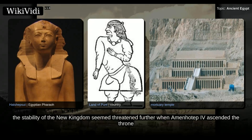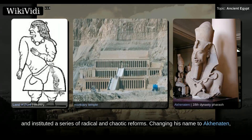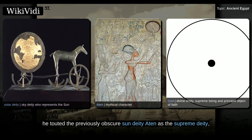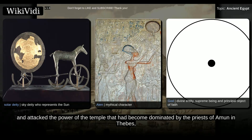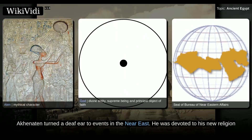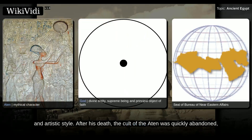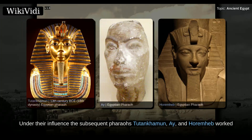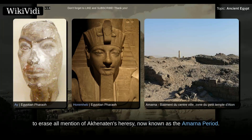Around 1350 BC, the stability of the New Kingdom seemed threatened further when Amenhotep IV ascended the throne and instituted a series of radical and chaotic reforms, changing his name to Akhenaten. He touted the previously obscure sun deity Aten as the supreme deity, suppressed the worship of most other deities, and attacked the power of the temple that had become dominated by the priests of Amun in Thebes, whom he saw as corrupt. Moving the capital to the new city of Akhetaten, Akhenaten turned a deaf ear to events in the Near East. He was devoted to his new religion and artistic style. After his death, the cult of the Aten was quickly abandoned. The priests of Amun soon regained power and returned the capital to Thebes. Under their influence, the subsequent pharaohs Tutankhamun, Ay, and Horemheb worked to erase all mention of Akhenaten's heresy, now known as the Amarna period.